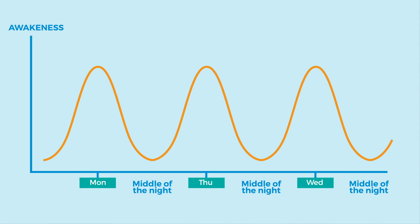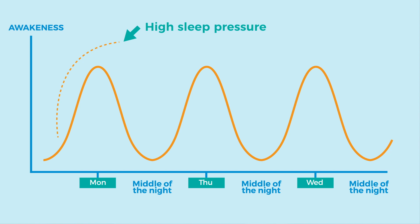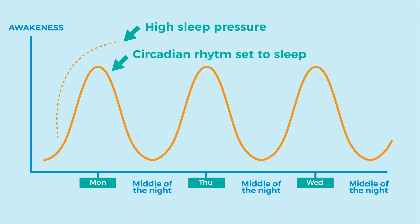When you're awake, your sleep pressure builds up over time. This system works analogously to other mechanisms in your body — for example, thirst, where thirst builds up gradually if you don't drink water, and by drinking water the thirst disappears. We have the perfect bedtime scenario when your sleep pressure is high while your circadian rhythm is pointing to sleep, as you see here.